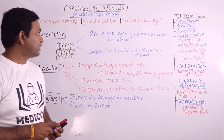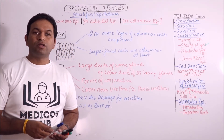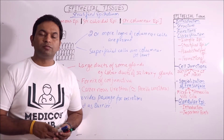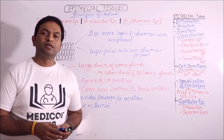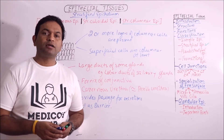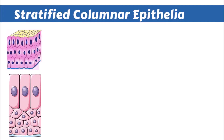This is all about the Stratified Columnar Epithelium. Now we will view some diagrams and images. In the given two diagrams, we are observing many layers of columnar cells — that is Stratified Columnar Epithelium. The basal cells may vary in shape a bit, but the superficial cells are columnar.